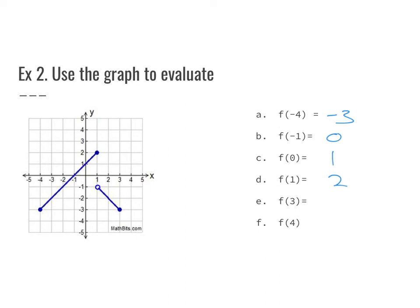For f(3): scrolling over to 3 on the graph, the y value is negative 3. For f(4): our graph only exists from negative 4 to 3, so at x equals 4 there is no answer — it does not exist.